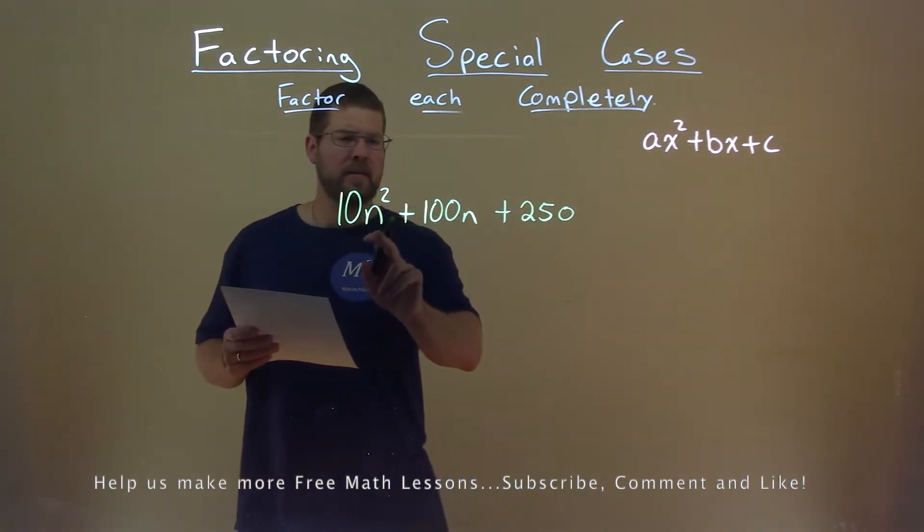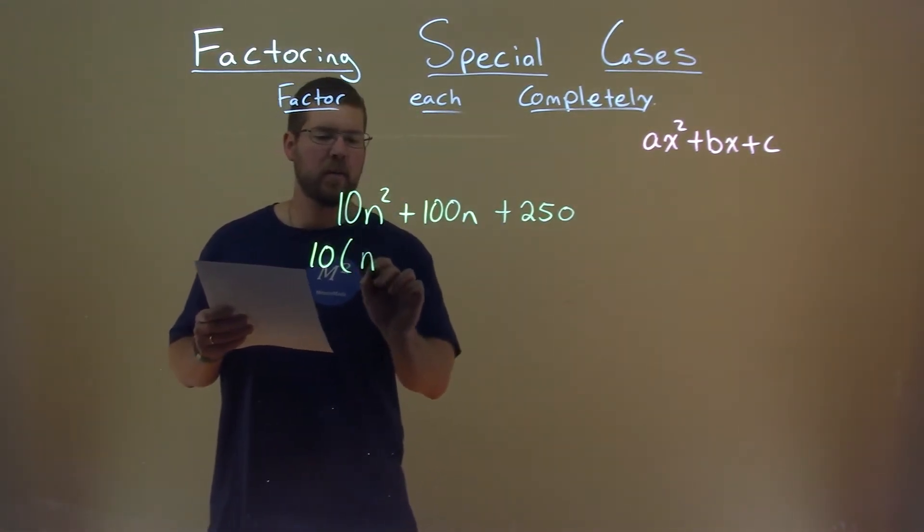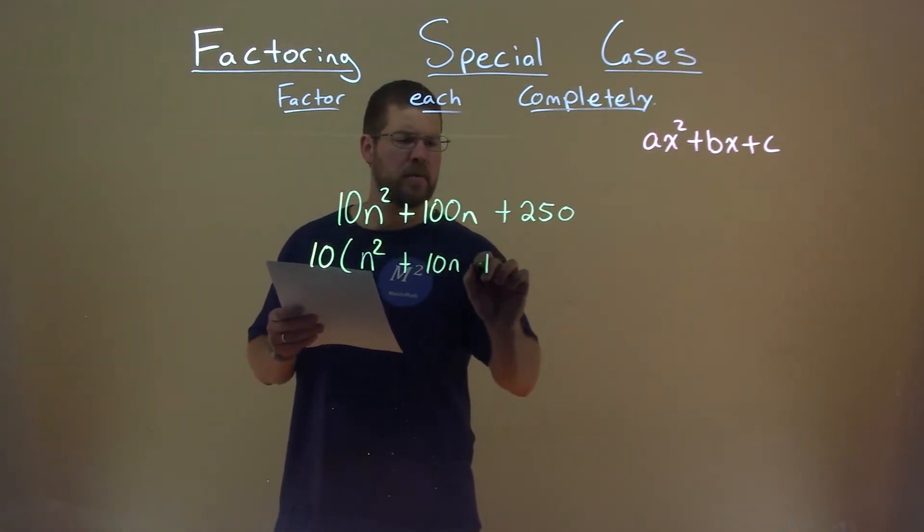One thing I noticed is that 10 is in all three parts, so let's simplify this a little. If you pull out a 10, we're left with n squared plus 10n plus 25.